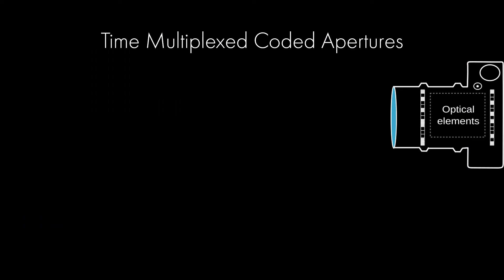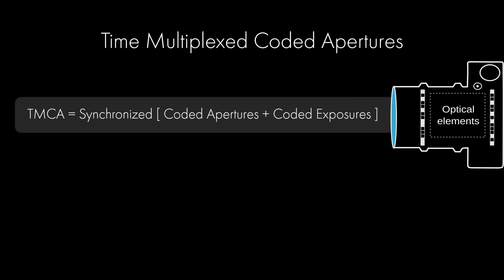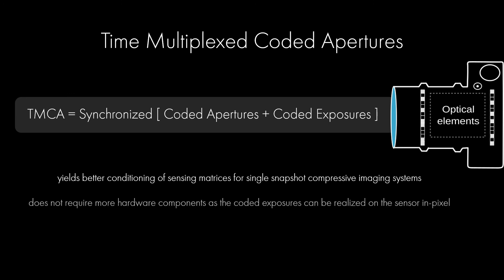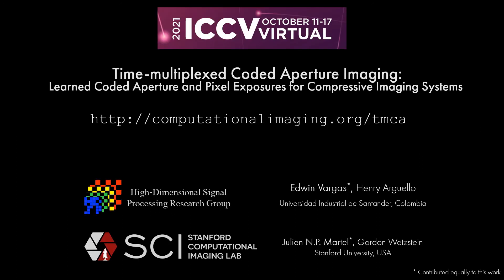In a nutshell, time-multiplexed coded apertures are time-varying synchronized coded apertures with coded exposures. They yield a better conditioning of sensing matrices for single snapshot compressive imaging systems, and they do not require more hardware components, as the coded exposures can be realized on the sensor in pixels. This work is a collaboration between the High Dimensional Signal Processing Research Group at the Universidad Industrial de Santander, and the Stanford Computational Imaging Lab.